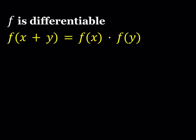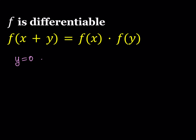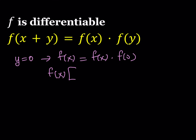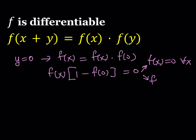I'm going to start by replacing y with 0, and that gives us f of x equals f of x times f of 0. One good strategy is to replace something with 0 or 1 — in many functional equations this seems to work. From here I can put everything on the same side and factor f of x out, giving f of x times the quantity 1 minus f of 0 equals 0. So this gives us two solutions: either f of x equals 0 for all x, or f of 0 equals 1.